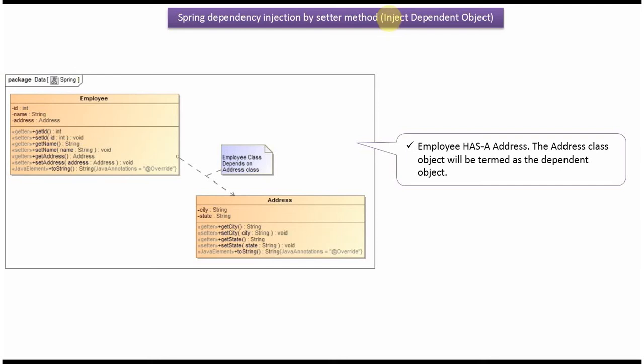In this video tutorial, I will cover how to inject a dependent object using Spring dependency injection by setter method. Here you can see the Employee class has an Address class, so the Employee class depends on the Address class, and the Address class object is called a dependent object.